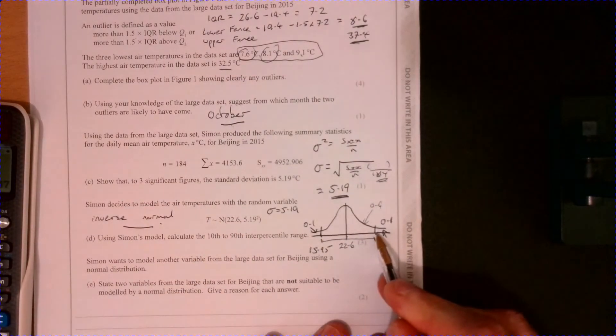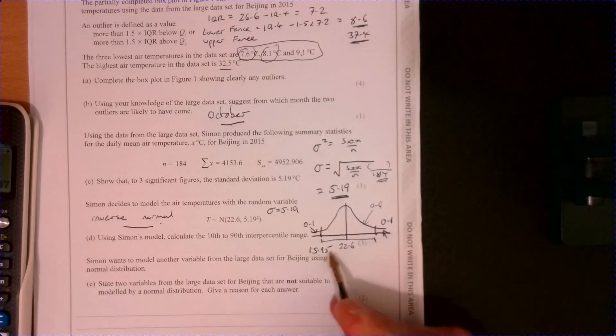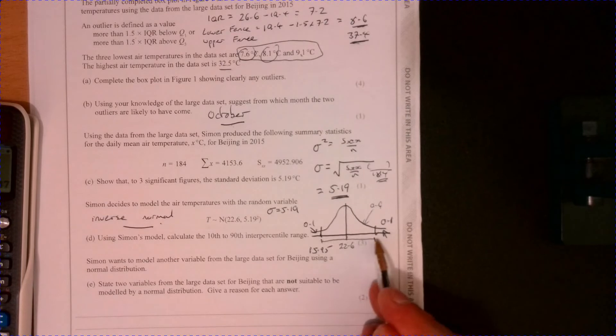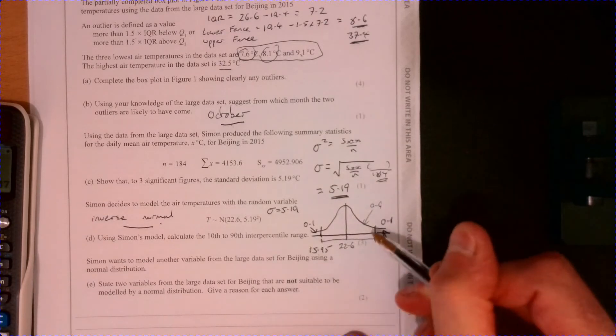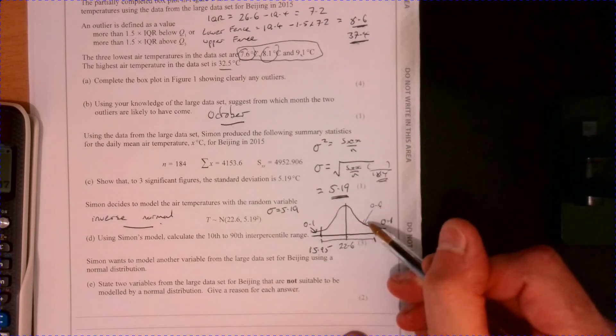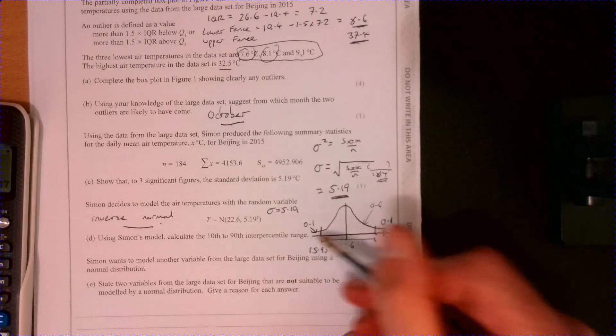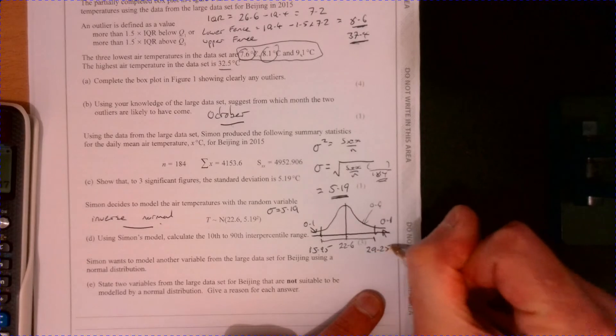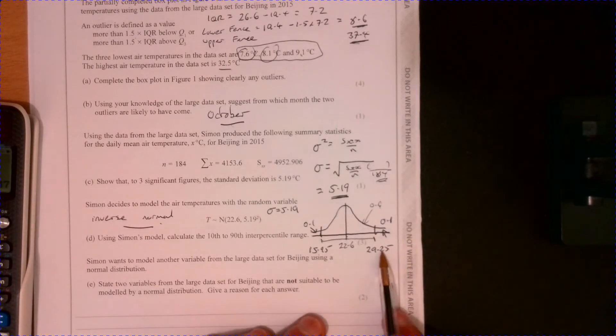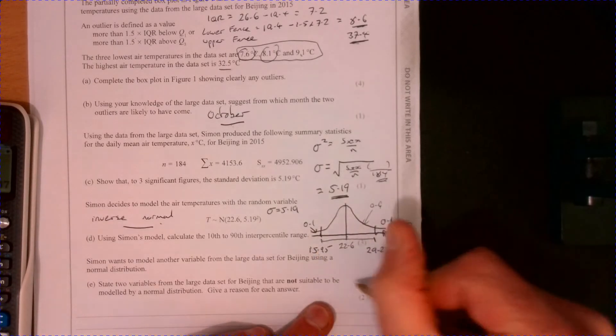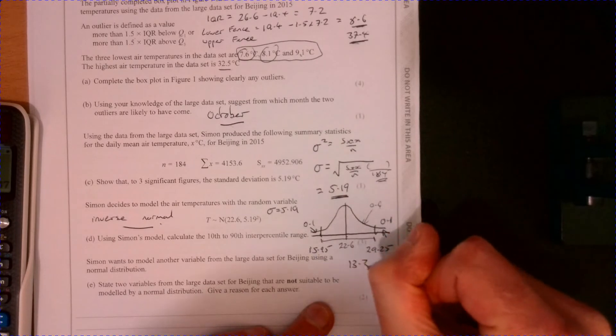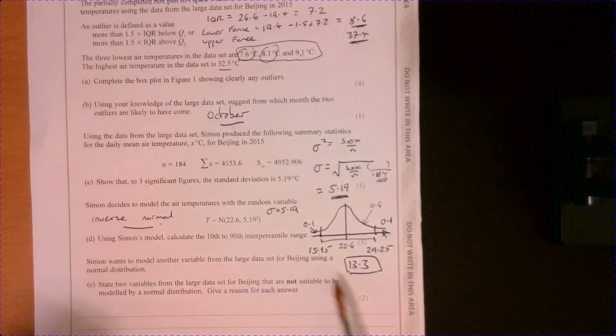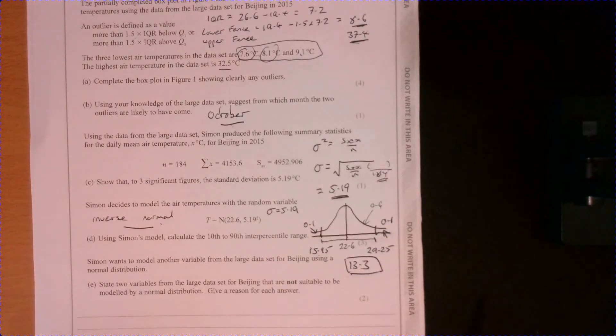Going to do exactly the same with this figure up here. Or you could look at this distance. You could just double this distance. That will give you your answer because it's going to be symmetrical. Or you could do exactly the same as what I just did, but put 0.9 into it. And then that will give you your answer. And if you do that, you get 29.25. So this figure, take away this figure. It's asking for the 10th to 90th interpercentile range, which is 13.3.